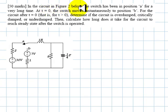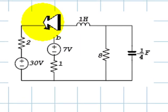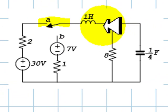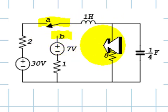In the circuit in figure 2 below, the switch has been in position A for a very long time. At t equals 0, the switch moves instantaneously to position B.